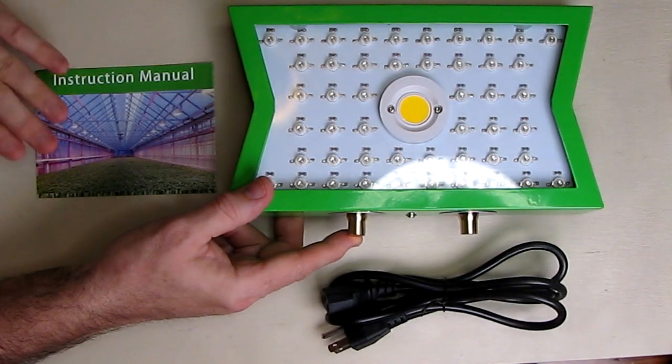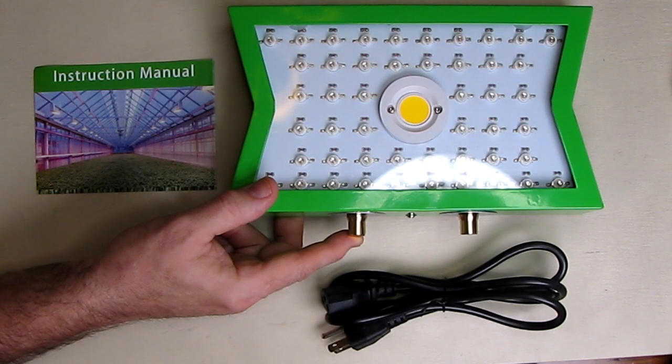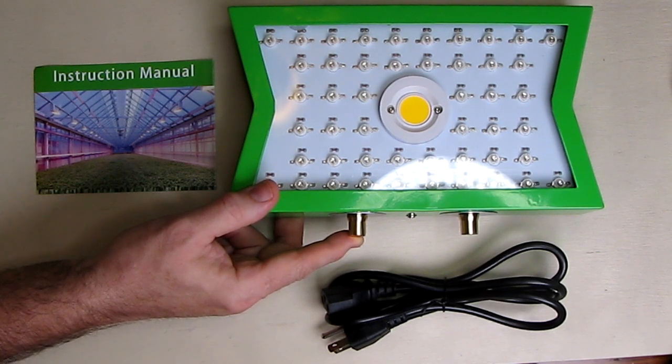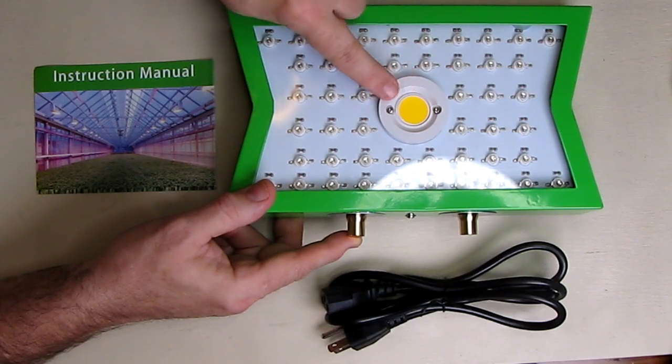Hello again, this is Robert Veach here and this is my video review of a COB LED grow light. The manufacturer and seller is Romance Link. Now this is unique for several reasons. It has a COB full spectrum LED in the center that has an individual control knob.